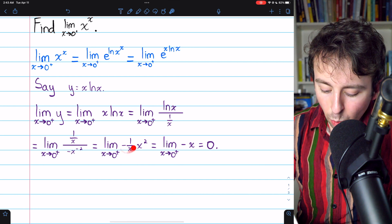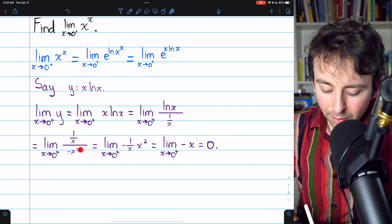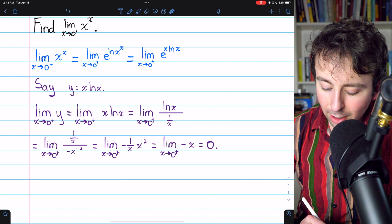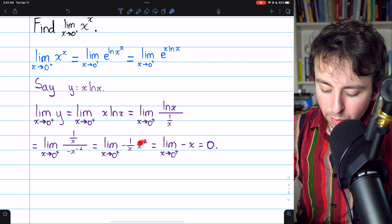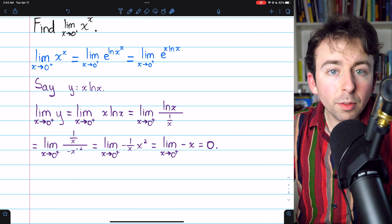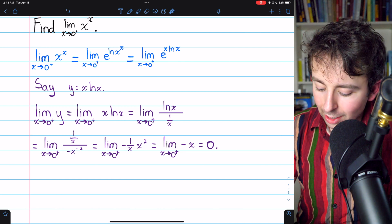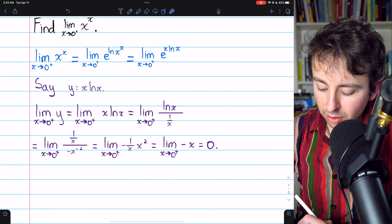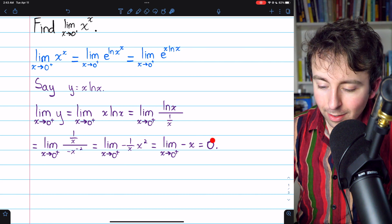The negative we can write next to the 1 over x. The x to the negative second we can bring up as x to the positive second. Then a factor of x will cancel out, and we'll just leave us negative x. At this point, we can plug 0 in. The limit of negative x as x approaches 0 from the right is 0.